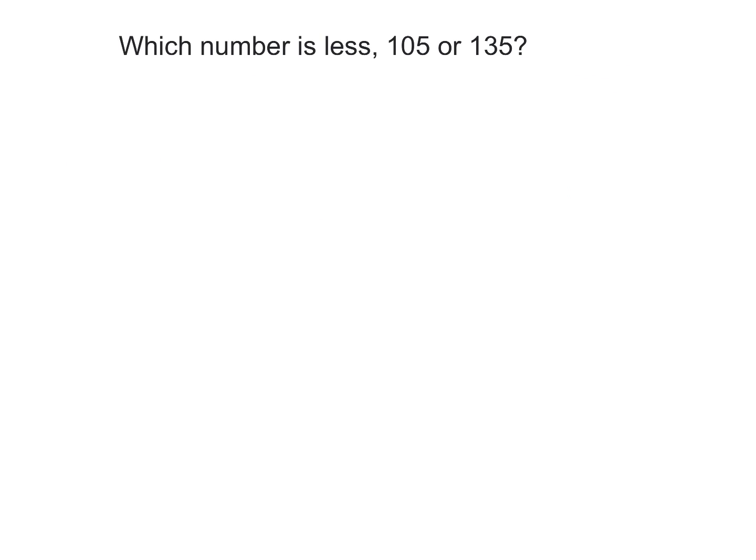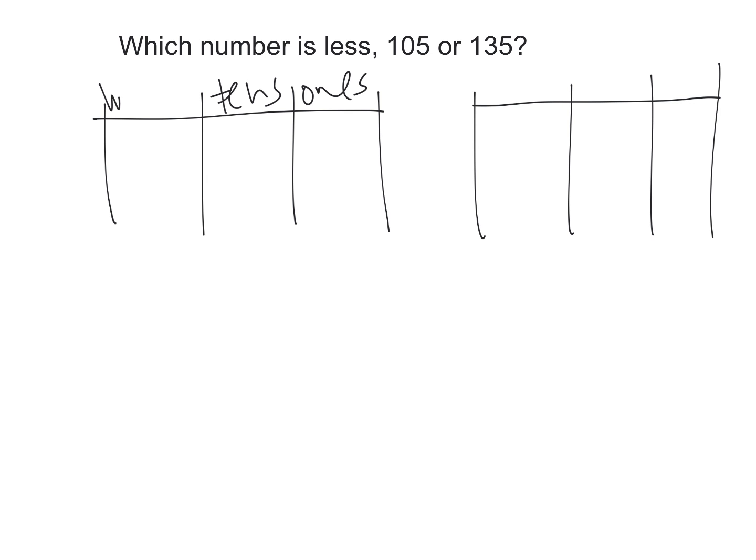So the idea is if we want to know which number is less, we can start by doing the place value disks. We're going to have ones, tens, and then hundreds, and ones, tens, and hundreds.